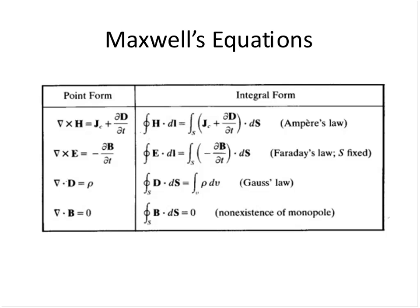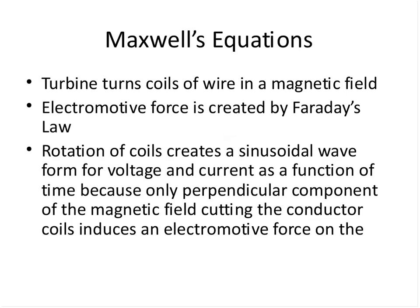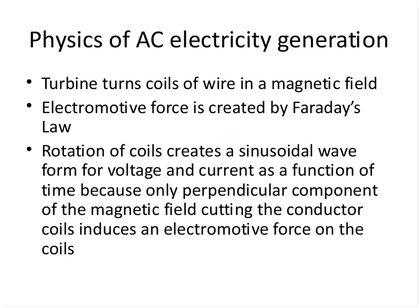The fourth equation — the non-existence of magnetic monopoles — says that if you have a north pole, you're going to have a south pole. If you did a volume integral of the divergence of B, you will see it goes to zero because it's a conservative field. So these four equations form the basis for all of electromagnetic theory we use today. I'm going to move now to how electricity is generated using these laws on those turbines.